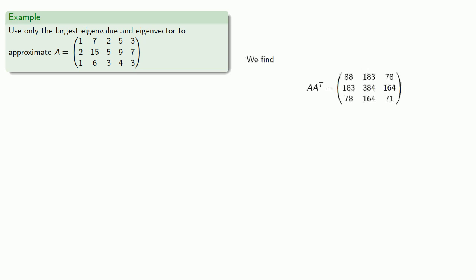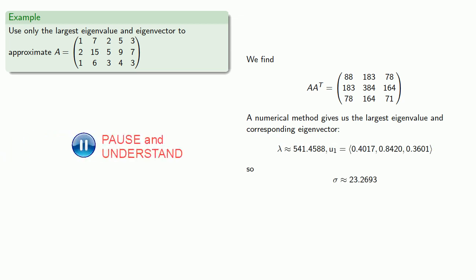So if we find AA^T, a numerical method gives us the largest eigenvalue and the corresponding eigenvector, and so our value of σ gives us the first column of our matrix U, as well as the first entry of our matrix Σ.